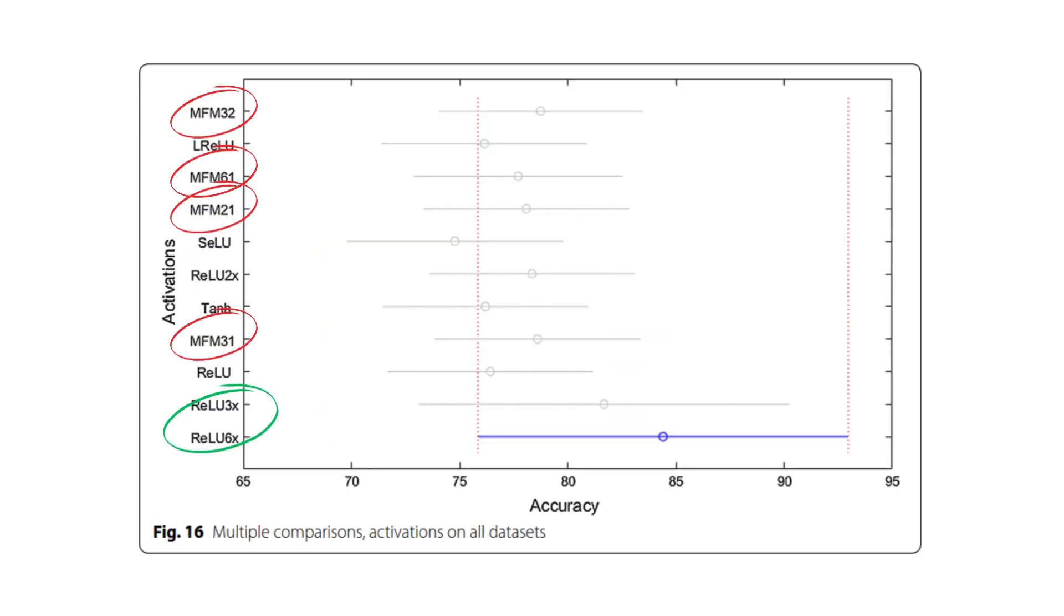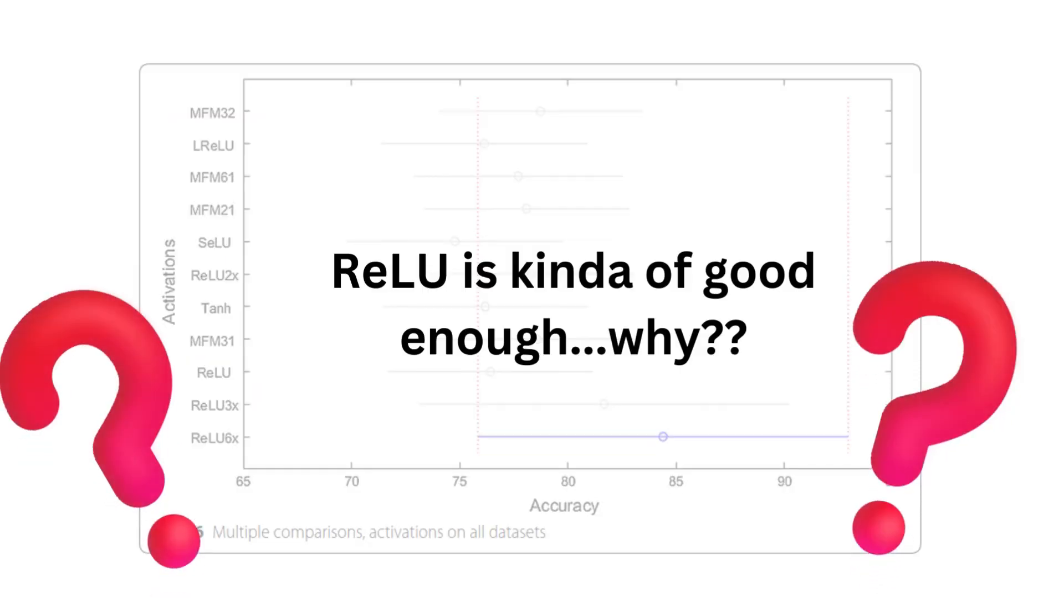As we can see in the spread of performance across the 18 datasets, maxout activation are doing good, but not as well as the ReLU variant with more neurons. So it seems that ReLU is kind of good enough for most purposes, especially if the parameters are matched for comparison.